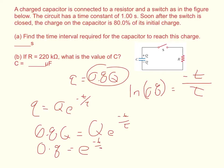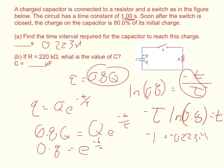Now the natural log of 0.8 is negative 0.22314, but we don't need to know that yet. What we need to do first is multiply by negative tau. So negative tau times the natural log of 0.8 equals T. It tells us our time constant in this problem is one second. So we do negative one times negative 0.22314, and that gives us a positive 0.22314 seconds.